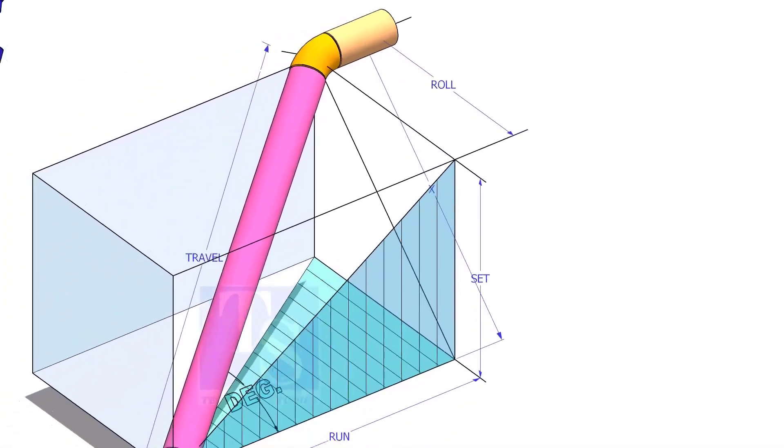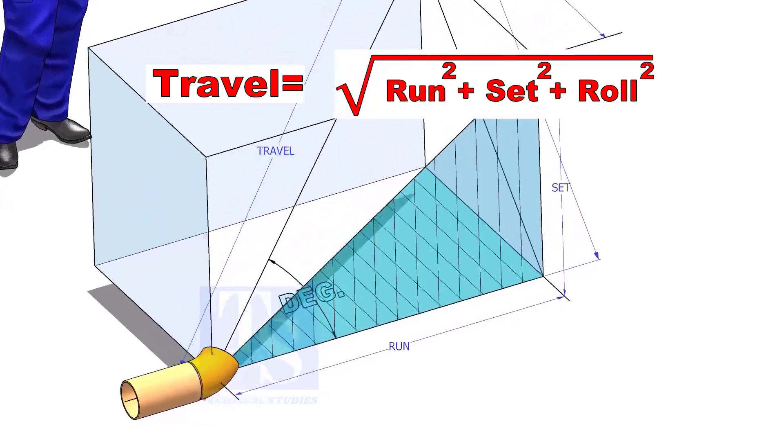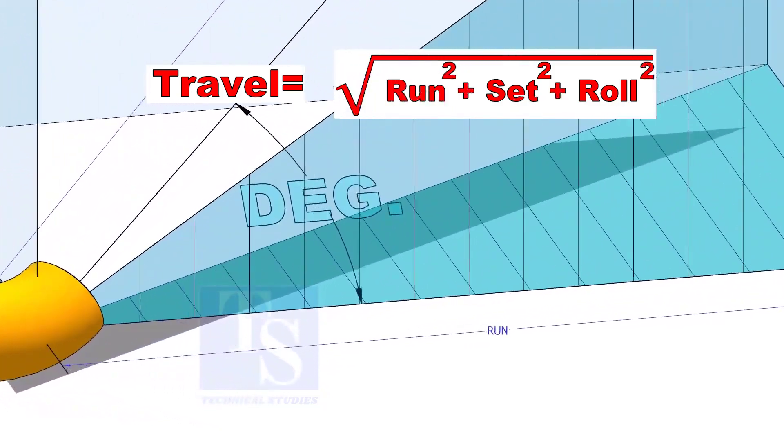The formula to calculate the travel length is root of the sum of the run, set, and roll.